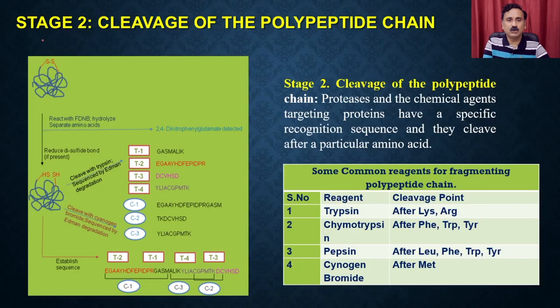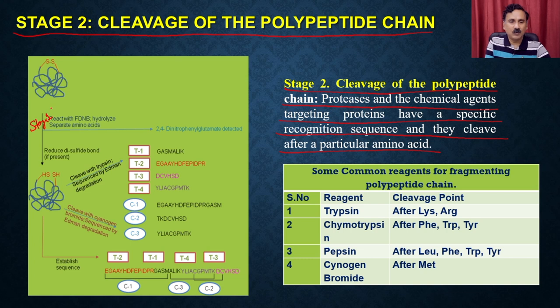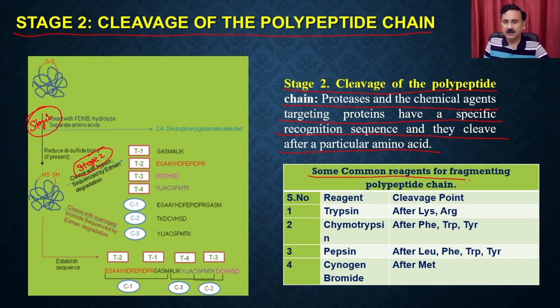In stage 2, you break the big polypeptide chain into multiple fragments — this is the cleavage of the polypeptide chain. Proteases and chemical treatments target proteins at specific recognition sequences and cleave after a particular amino acid. Some common reagents for fragmenting the polypeptide chain: the enzyme trypsin has a cutting site after lysine or arginine, wherever lysine or arginine is present.